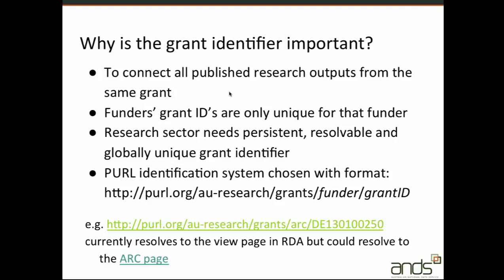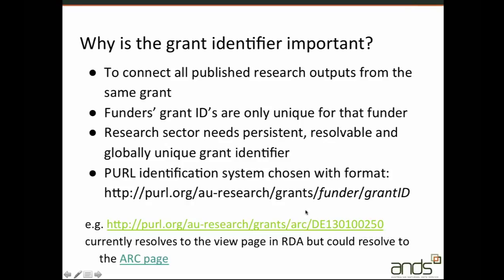We chose the PEARL identification system for this. Currently the identifiers resolve to a view page in Research Data Australia, but as funders develop their own online systems it is possible for the research grant identifier to resolve to a view page in their system instead. The grant identifier is formed with the funder acronym always coming before the grant ID, so we can redirect grant identifiers of this form to view pages in the ARC's online systems rather than our own.